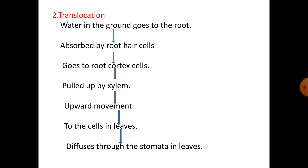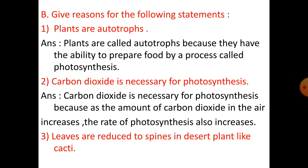Number two — Translocation flow chart: Water in the ground goes to the root, absorbed by root hair cells, goes to root cortex cells, pulled up by xylem in an upward movement to the cells in leaves, then diffuses through the stomata in leaves.